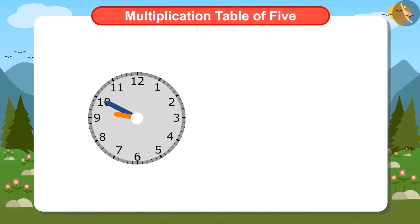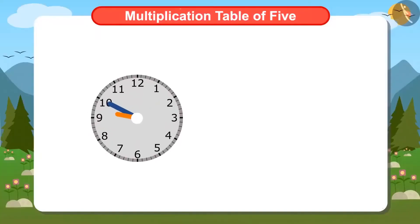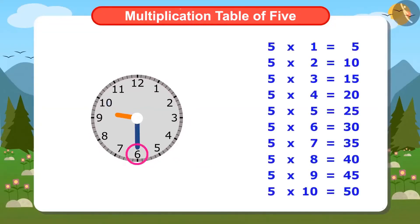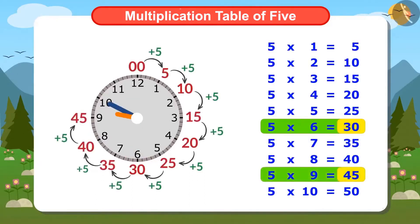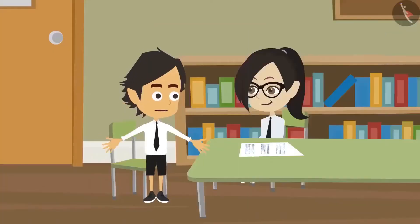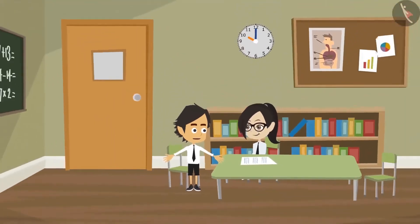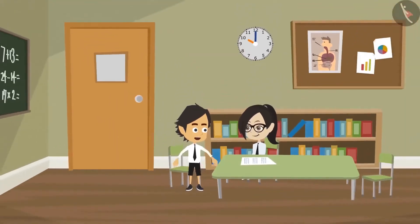Now look at the clock — when the minute hand is at 6, reading the multiplication table of 5 up to 6 will tell that it is 30 minutes. And when it is on 9, it will be 45 minutes. Yes, this is the right way to read time.